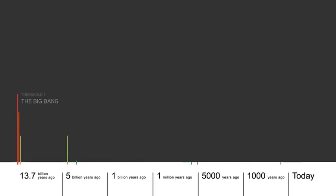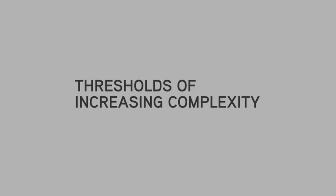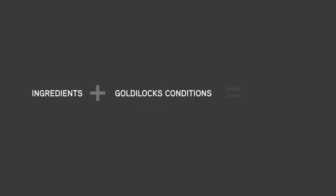Eight dramatic transitions drive Big History's 13.7-billion-year story. We call these major thresholds of increasing complexity. They're times when the right ingredients combined with just the right conditions to enable the creation of an entirely new form of complexity.